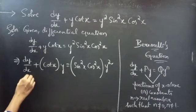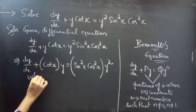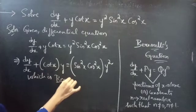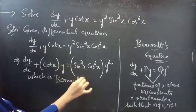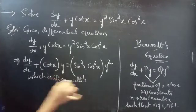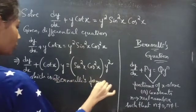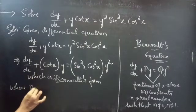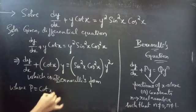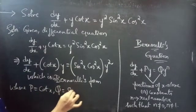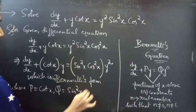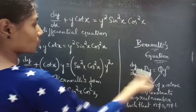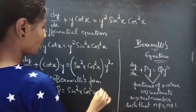This is in Bernoulli's form, where p equals cot(x) and q equals sin²(x)·cos²(x). By comparing y² with y^n, we get n equals 2.